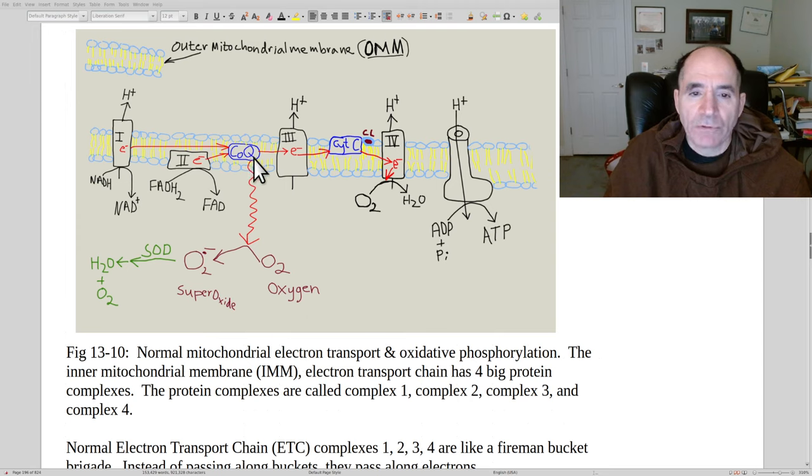Here's coenzyme Q traveling in the inner mitochondrial membrane. Occasionally, an electron will fall off a coenzyme Q, it's called electron leak, and it can combine with an oxygen within the mitochondrial matrix to form a superoxide. These are usually neutralized quickly by superoxide dismutase, but sometimes this can be excessive.